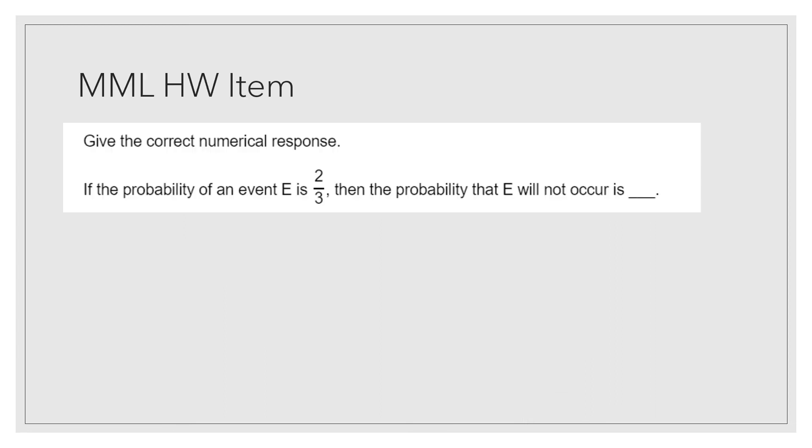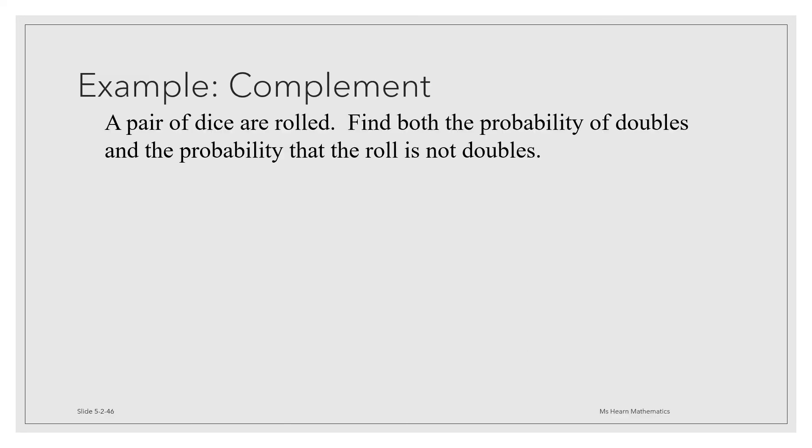Here's an example from a MyMathLab homework item. It says, give the correct numerical response. If the probability of an event E is 2/3, then the probability that E will not occur is blank. This is an example of a time when you would apply the complements principle of probability. We know that the probability that E doesn't occur is 1 minus the probability that it does. This is going to be 1 minus 2/3, which is 3/3 minus 2/3, or 1/3.